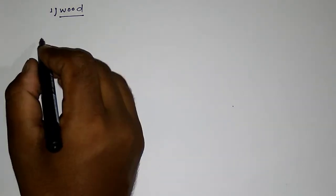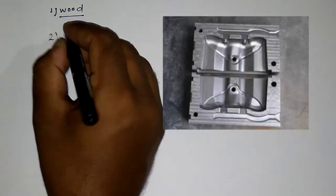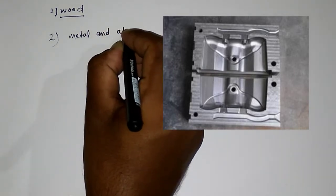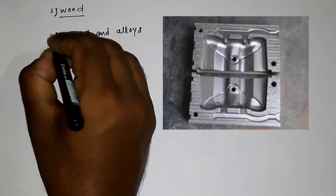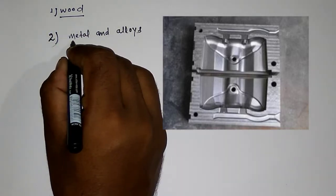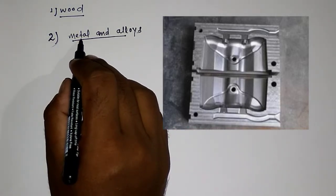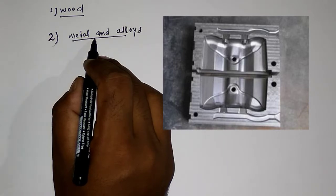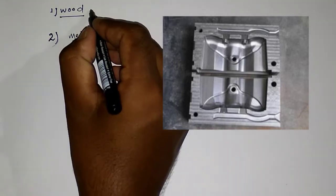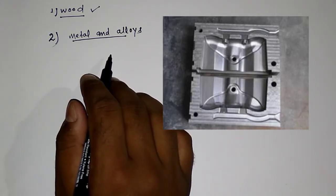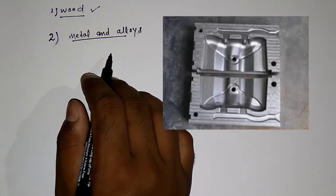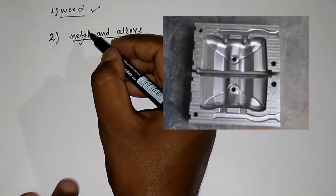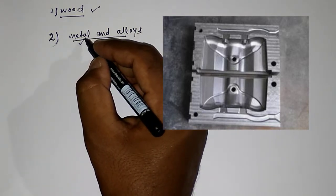Next one is metal alloy. Patterns made from metal alloy are used for repetitive production of casting, in large scale. If we use wood for repetitive production, the wood material may break because it is not so hard. But metal material is hard, so we use it for repetitive production of casting.